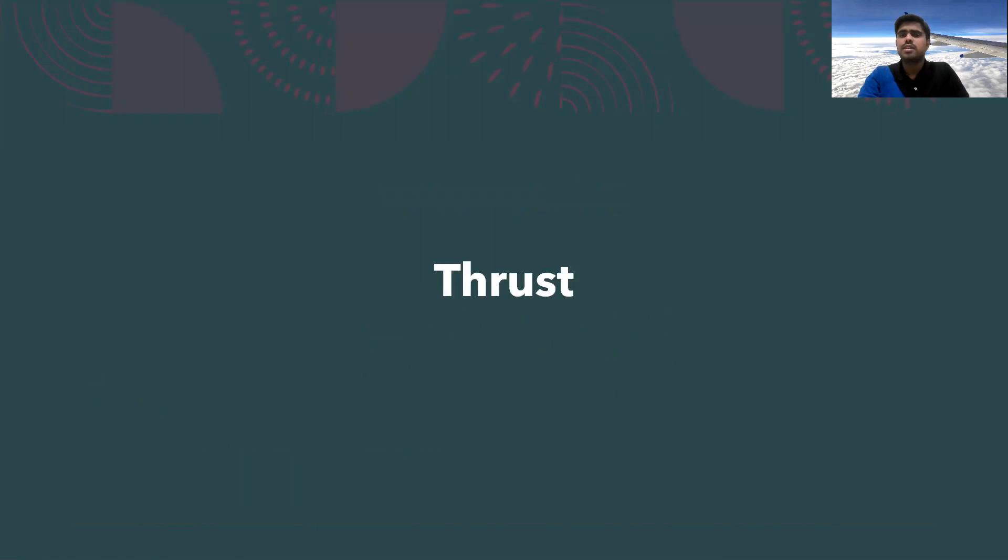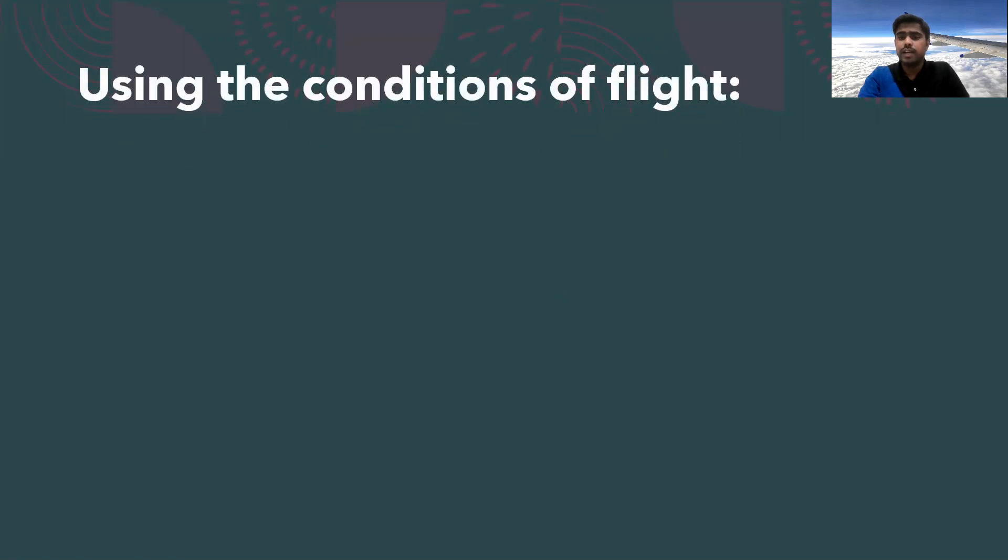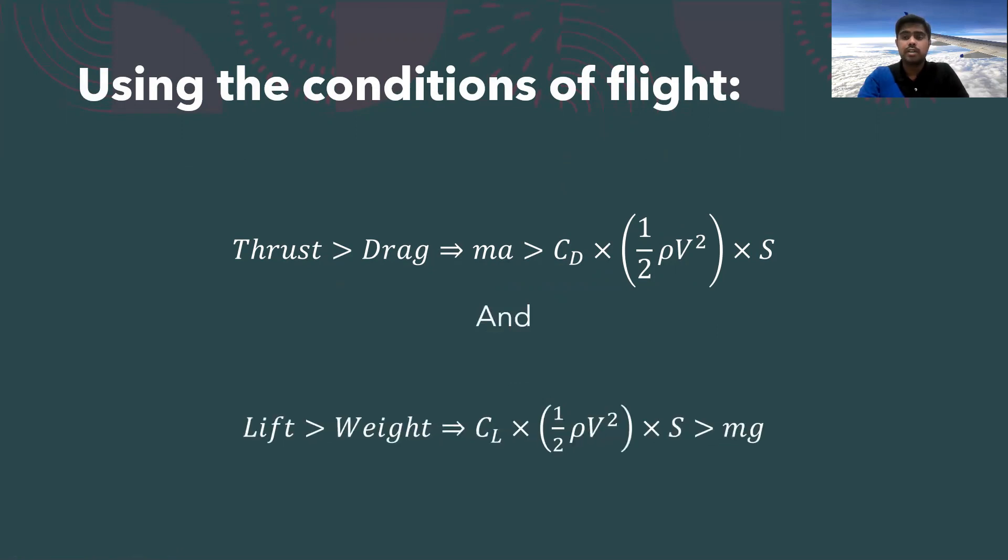What is thrust? Thrust is the force that we apply through the engines by burning fuel in order to take the aircraft forward. This has to exceed drag. This is again given by Newton's second law using the conditions of flight that we used earlier. We can say that the thrust must be greater than drag, which gives rise to this particular equation. And we know that the lift must be greater than weight in order to climb. So this equation must be satisfied to climb effectively.